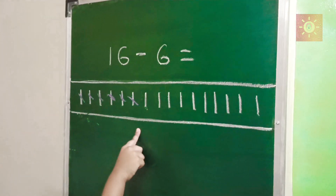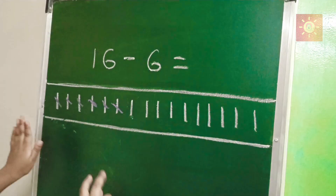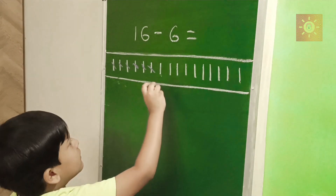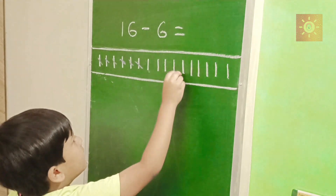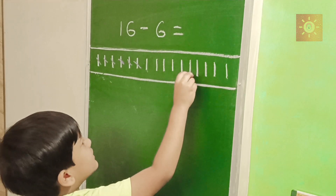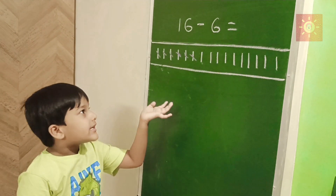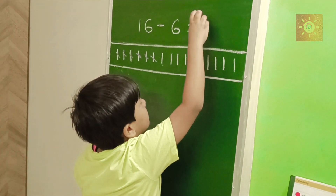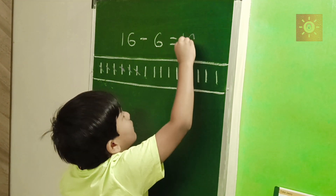Now we should count without the six lines. One, two, three, four, five, six, seven, eight, then it's done. Ten is left, so we should write that here. There's something more to do, friends.